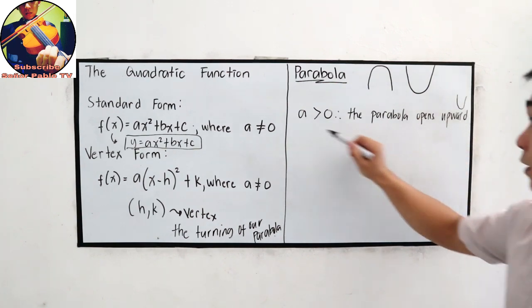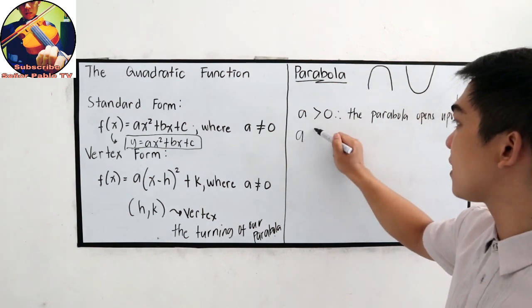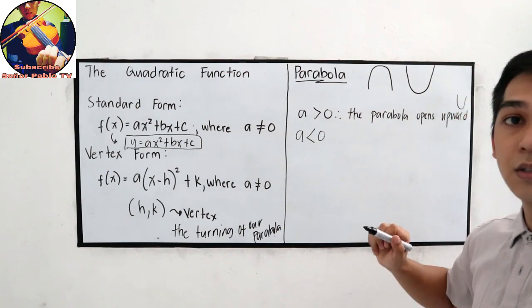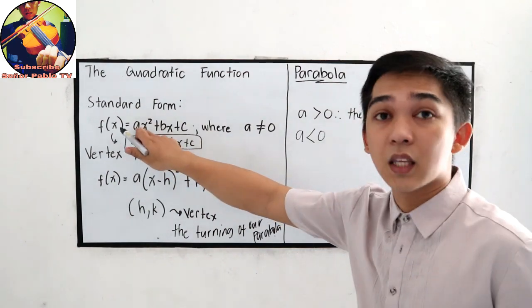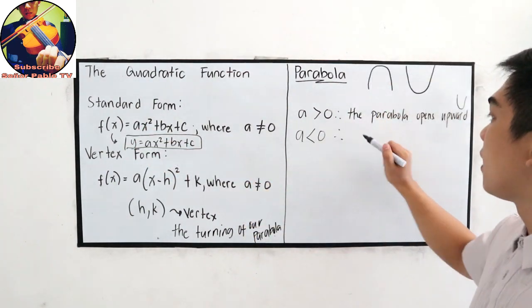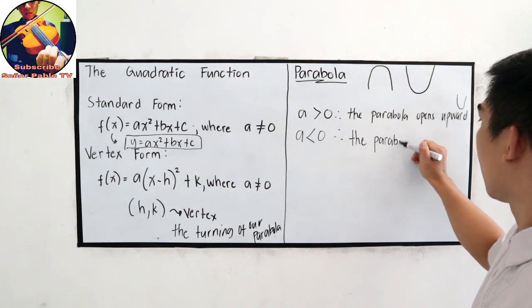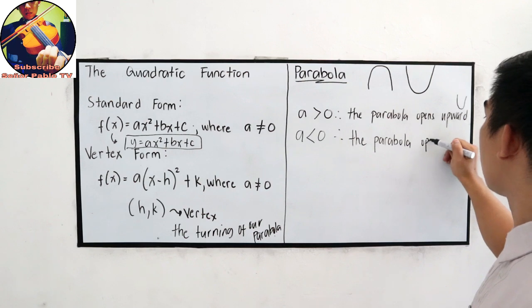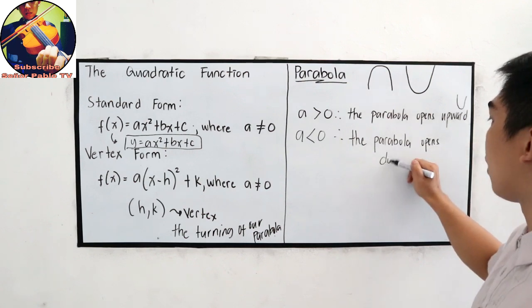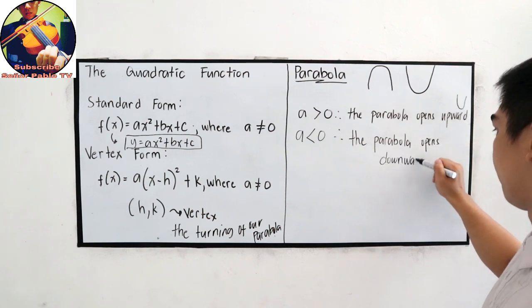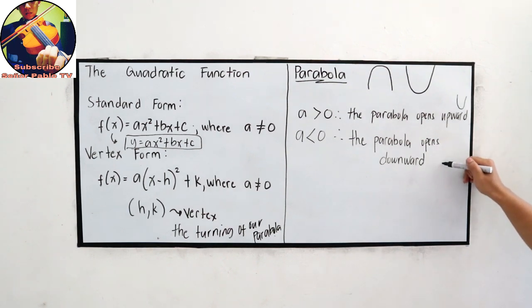And if a is less than 0, that means our a is negative, the parabola opens downward, so the position is like this one.